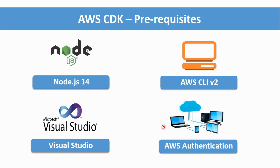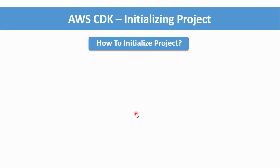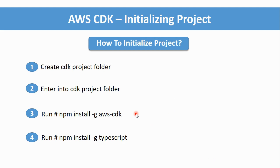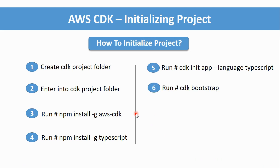To initialize a CDK project, first create a project folder and navigate into it. Then install the CDK package using npm install. Since I am using TypeScript, I install TypeScript support for the CDK project. Then run CDK bootstrap to generate the CloudFormation template and an S3 bucket inside your AWS account — CDK creates that S3 bucket to manage its own changes.